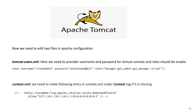Two files need modification in Apache Tomcat configuration. In the tomcat-users.xml file, we provide username, password, and roles to enable Tomcat console access. In context.xml, we comment out one entry using XML comment syntax. Both files have been edited and placed in the source code repository so we can download and replace the existing files directly without manual configuration.